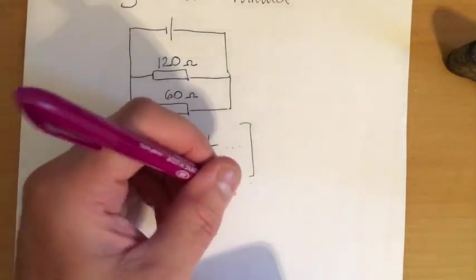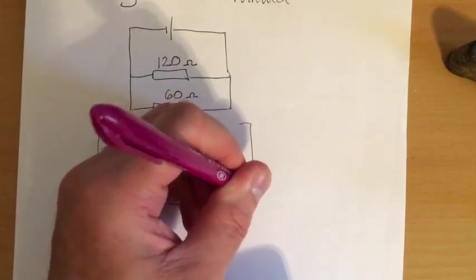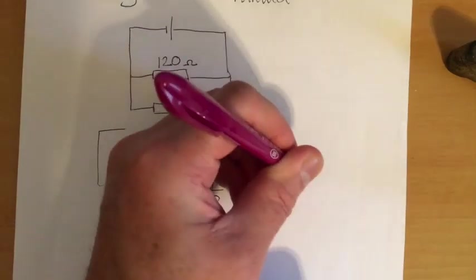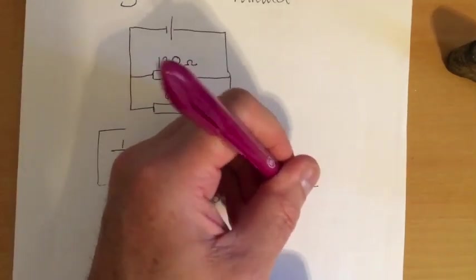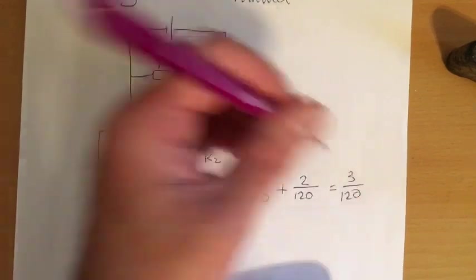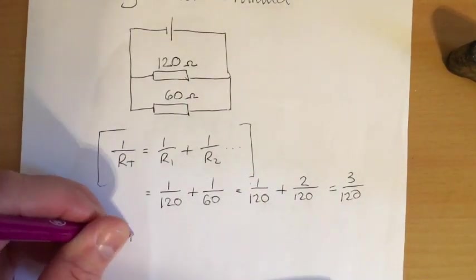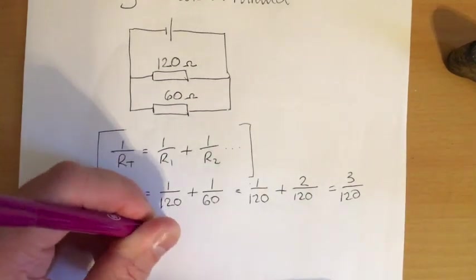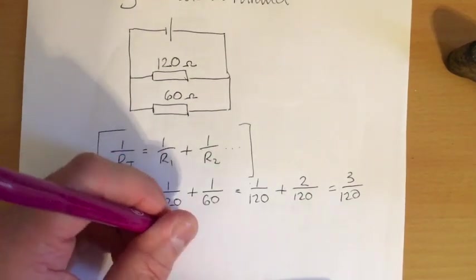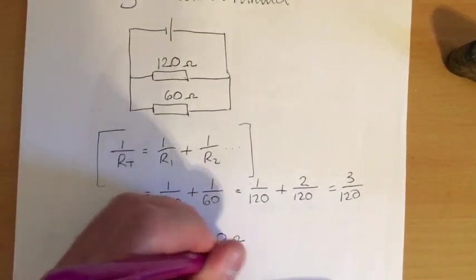And then you have to find the common denominator. So that's 1 over 120 plus 2 over 120 is 3 over 120. And then you flip that to get RT over 1 equals 120 over 3 is 40 ohms. That's the long way to do it.